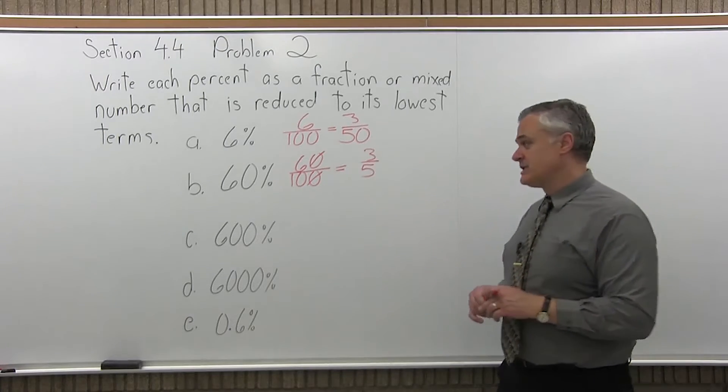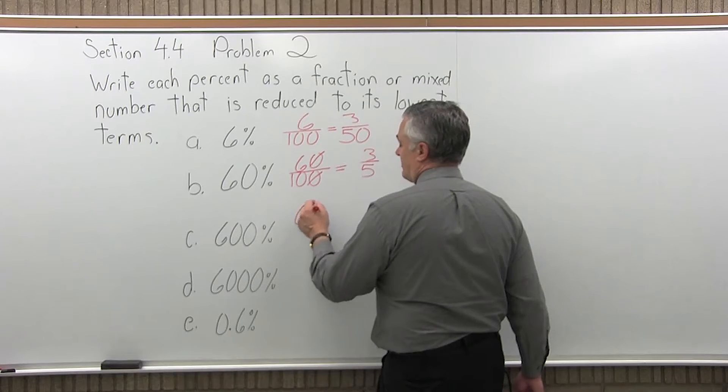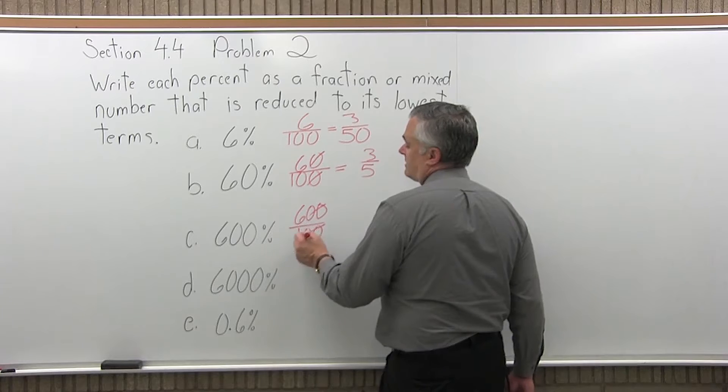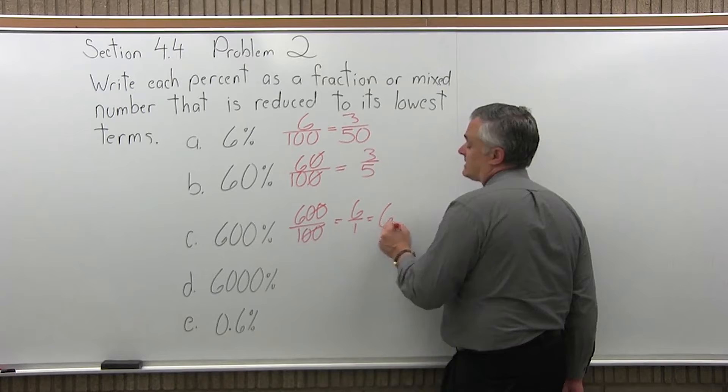The next one is 600%. So to convert a percent to a fraction write the percent over 100. So I'd have 600 over 100. And again, you've got the zeros that will cancel. So I have 6 over 1, which you could more simply write as just 6.